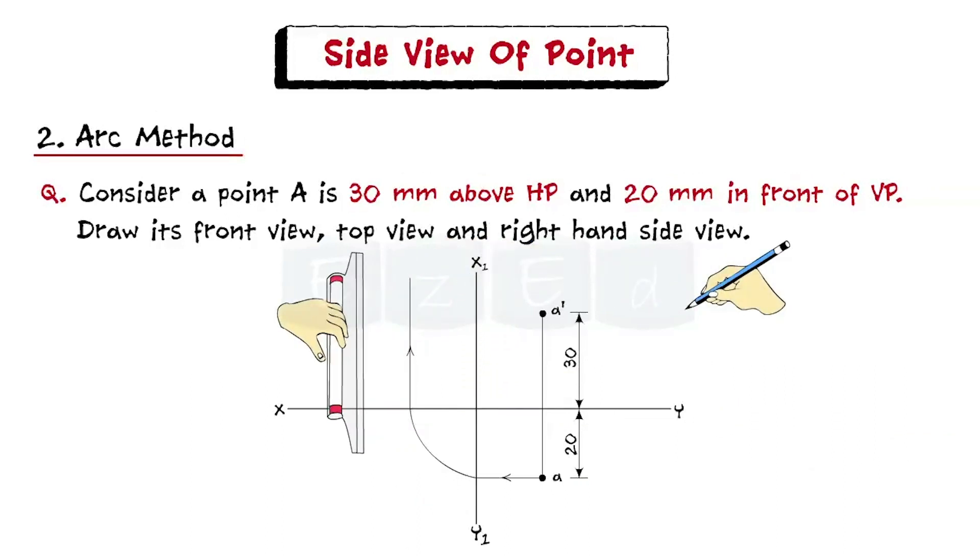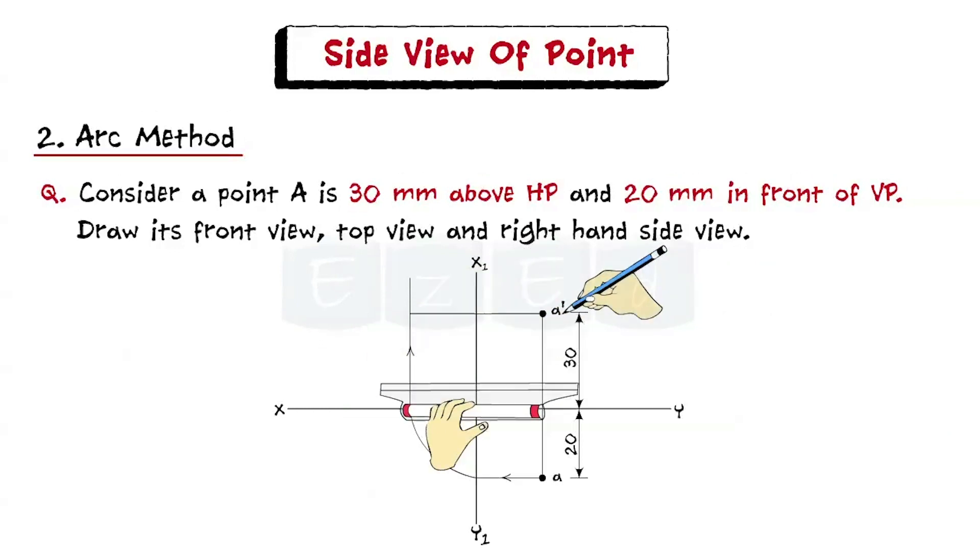Step 6. Now, draw a horizontal line from A dash. The intersecting point is A double dash which is the required right side view.